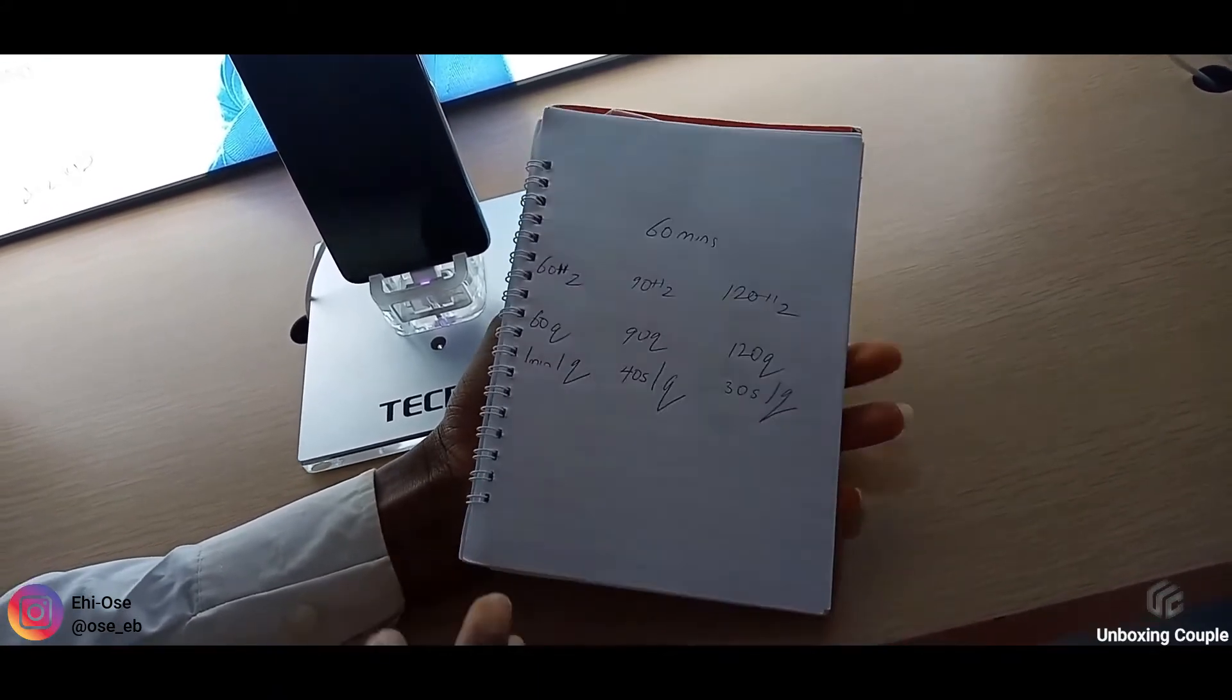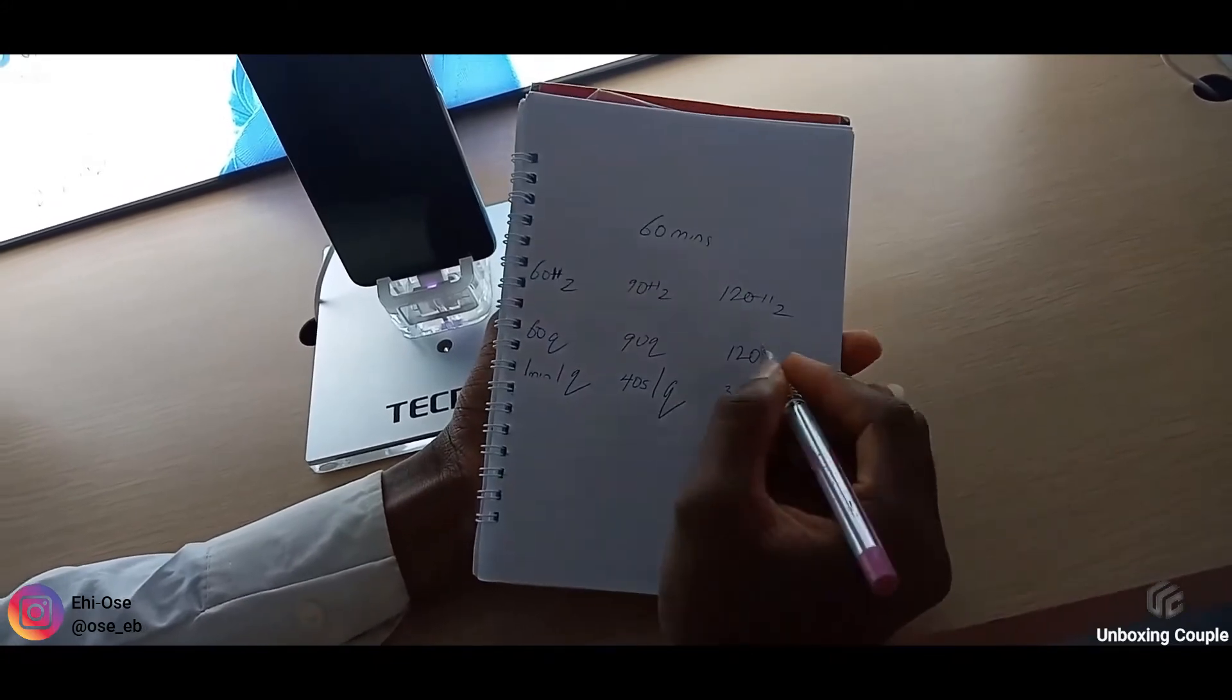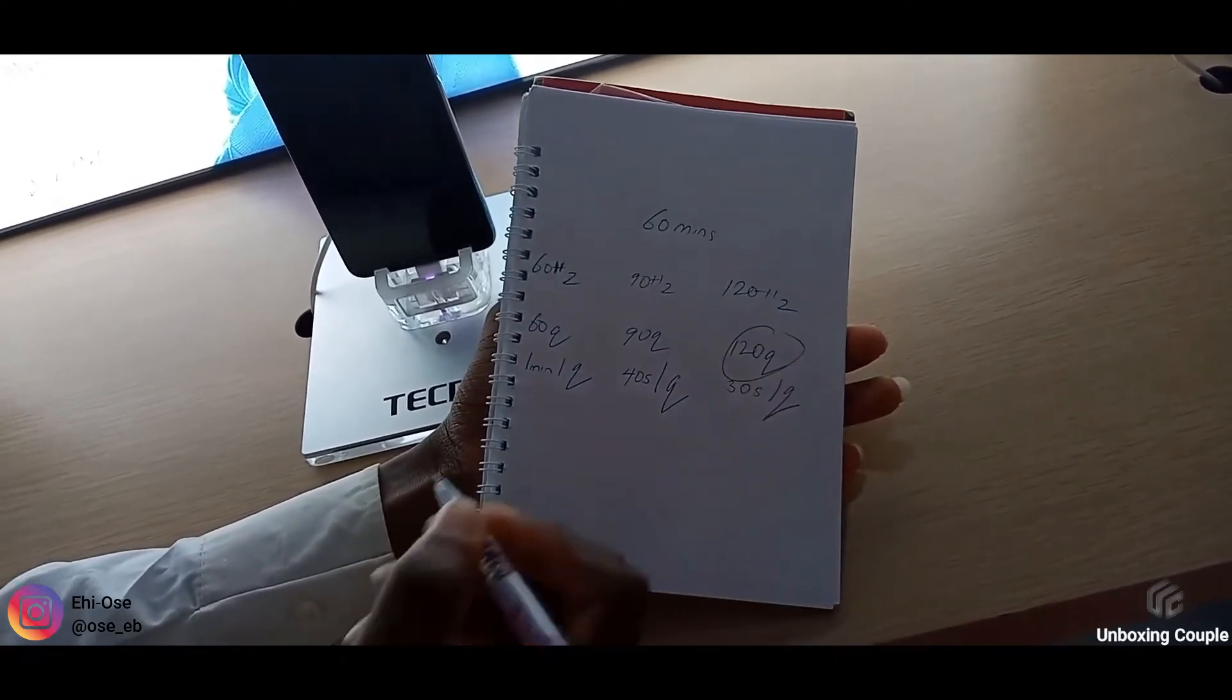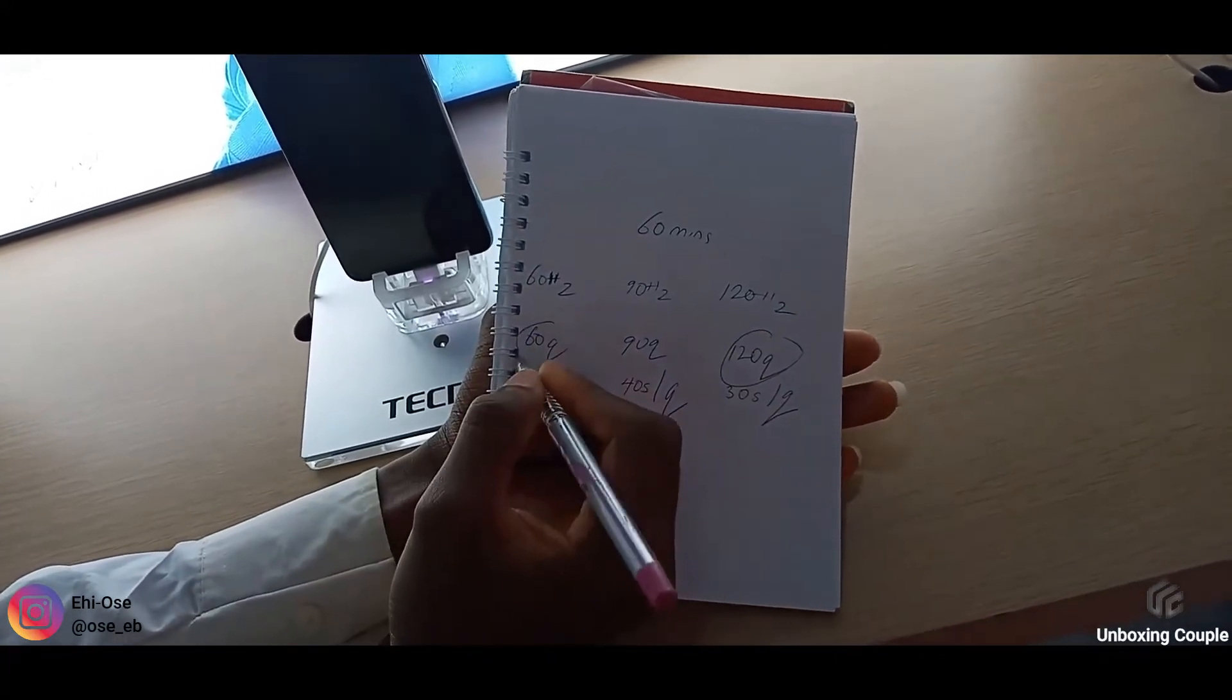Which means that you have to be faster in order to answer the 120 questions, and you have to be slower to answer the 60 questions.